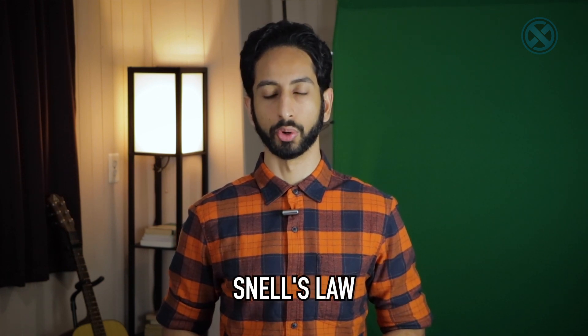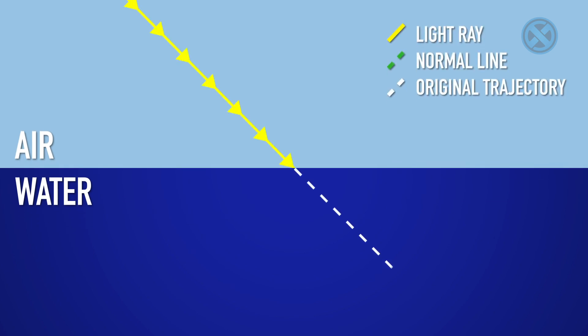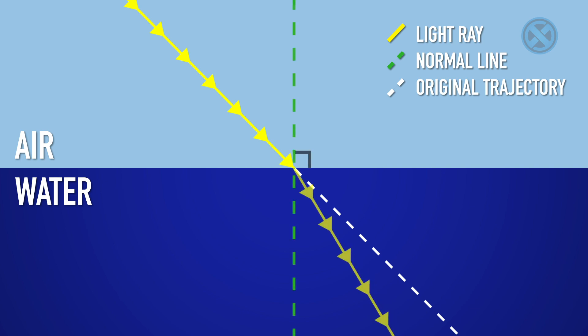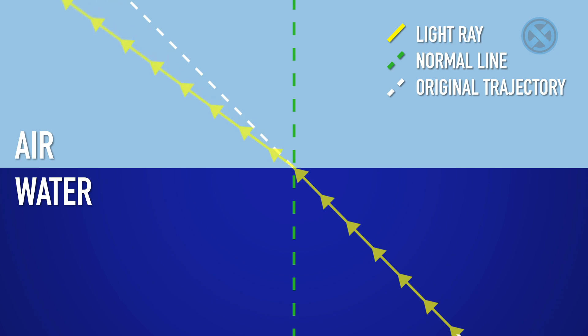Refraction works according to some predefined rules established by the physical principle known as Snell's Law. Essentially, it states that if a ray of light passes from a less dense medium like air into a more dense one like water, its path will bend towards the normal line — an imaginary line that forms a right angle to the boundary and goes through the point where the light ray crosses over. On the other hand, if the light ray passes from the more dense medium to the less dense one, it'll bend away from the normal line. In short, light is refracted in one direction when it moves from low to high density, and the opposite direction when it moves from high to low density. The greater the difference in density between the two materials, the more the light is bent.